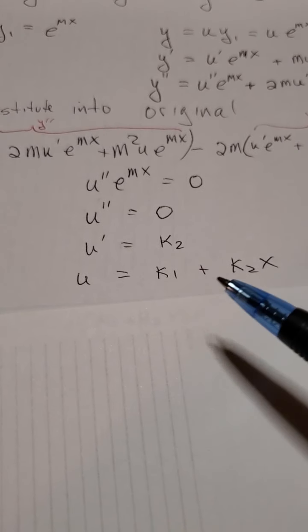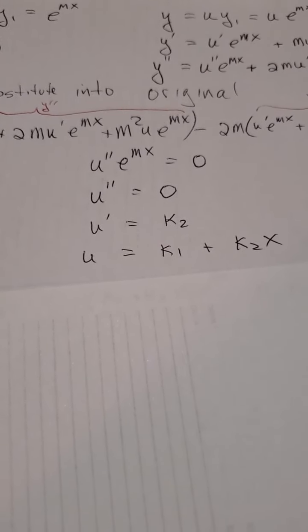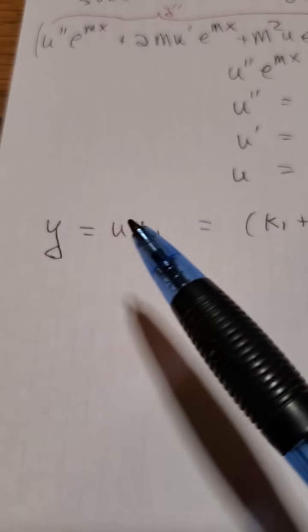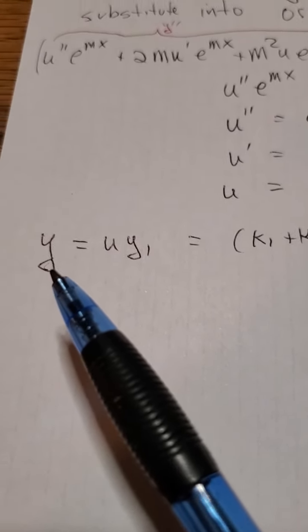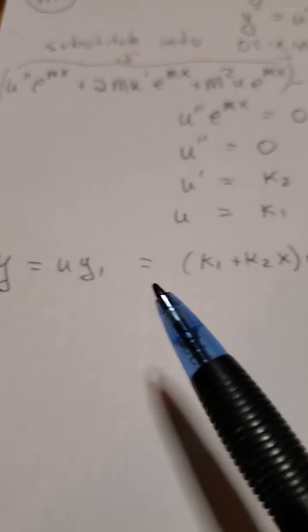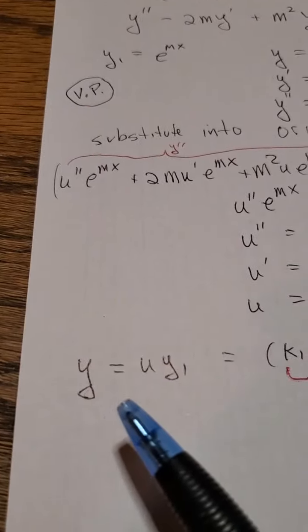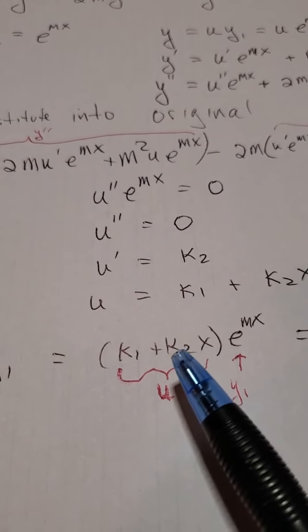Finally, in my variation of parameters, I'm going to take this u and multiply it by y1. So I'm going to take this u over here, I'm going to multiply it by y1, so to get my y: y equals u times y1. And u is just this, and y1 is that.